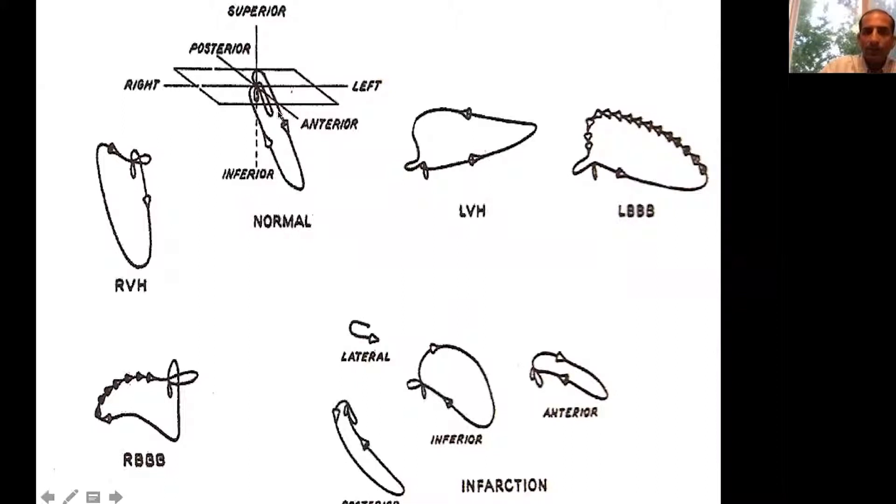You have a vector activation of the normal activation of the heart, of the ventricles; this is how it goes. If the patient develops left ventricular hypertrophy, the vector is shifted towards the left. If the patient has left bundle branch block, the vector is shifted towards the left. If the patient develops right ventricular hypertrophy, the vector loop will be directed towards the right side. If the patient has right bundle branch block, the vector will be activated towards the right side of the heart.